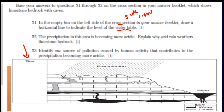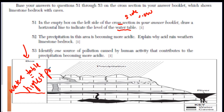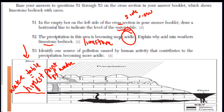If you look at the key, the water is the black area. The water table is right here — that's the water table. It's the highest point of the water under the ground. Question 52: the precipitation in this area is becoming more acidic. Explain why acid rain weathers limestone. The answer would be: limestone has calcite, which dissolves with acid.